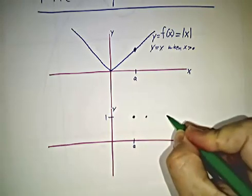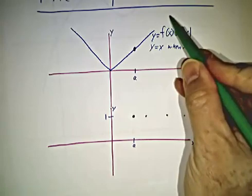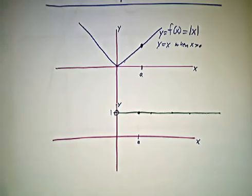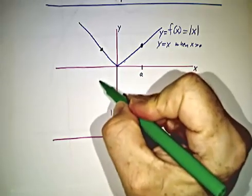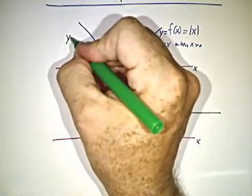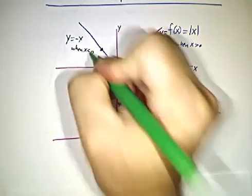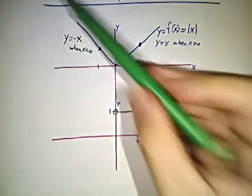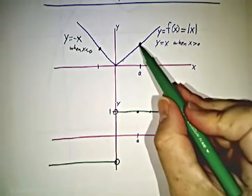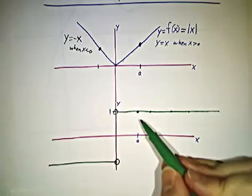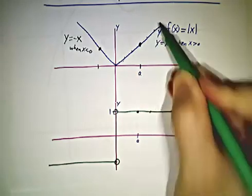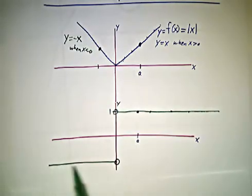So the derivative function is 1 for all positive values of x. Whenever x is negative, we've got the line y equals negative x, and that has a slope of negative 1. So the derivative is negative 1 there. This is the graph of the original function, and this is the graph of the derivative. The value of the derivative function — 1 for positive x — is the slope of the original function. Over on the negative side, the slope is negative 1, and the value is negative 1.